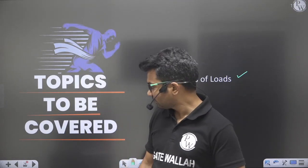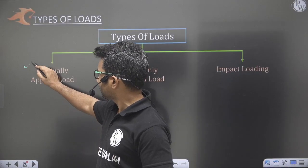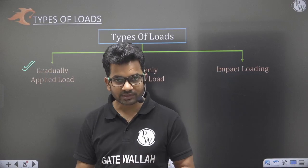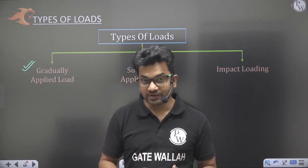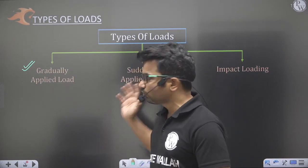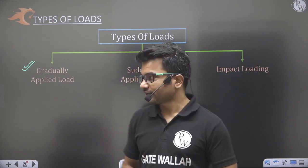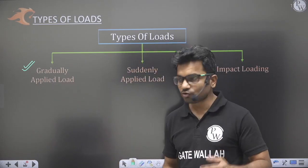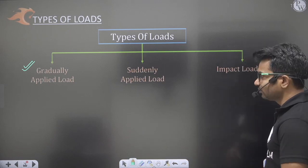The first one is gradually applied load, the second one is suddenly applied load, and the third one is impact load. The most important is gradually applied load — almost 99% of the time you will be getting questions on gradually applied load. Whenever it is not stated in the question which type of load is present, you have to assume that it is gradually applied load only.